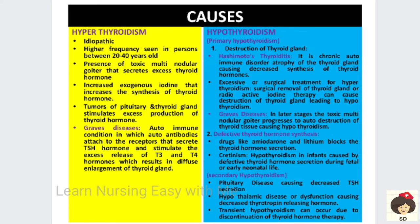Graves' disease can also cause either hyper or hypothyroidism. If autoantibodies attach to receptors and produce more TSH, it results in hyperthyroidism. On the other hand, if the immune system functions abnormally and causes auto-destruction of thyroid tissue, the patient will have hypothyroidism due to decreased secretion of thyroid hormones.